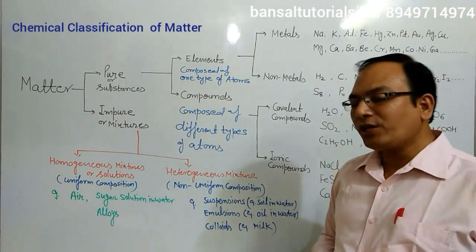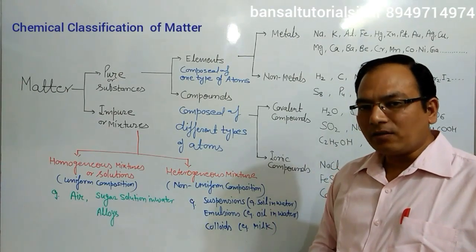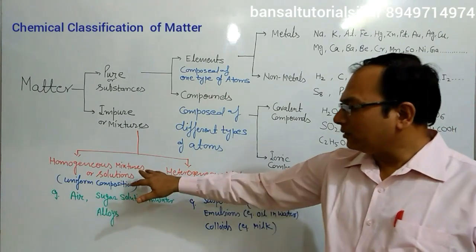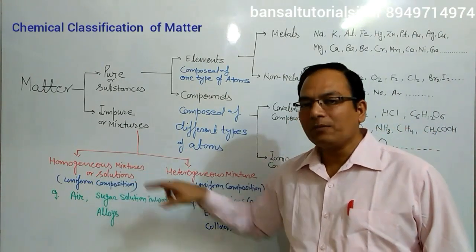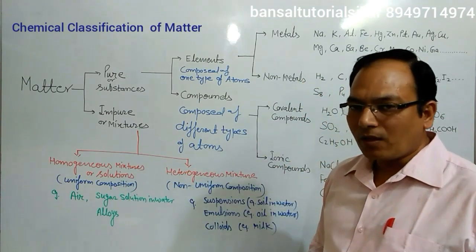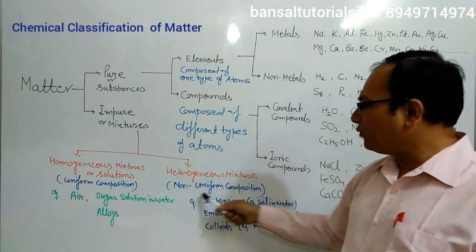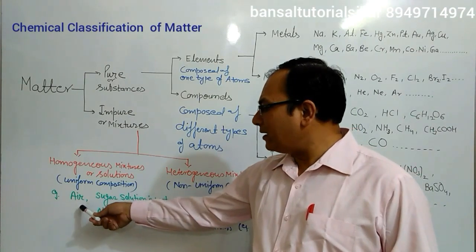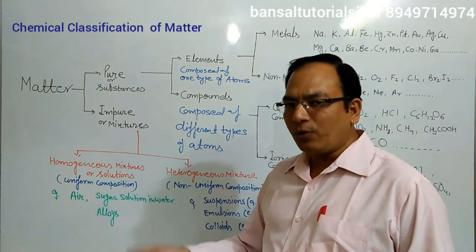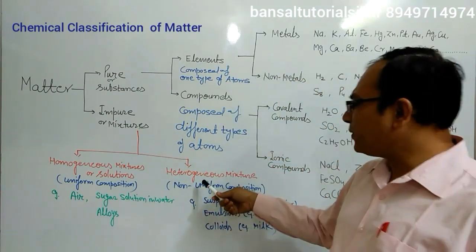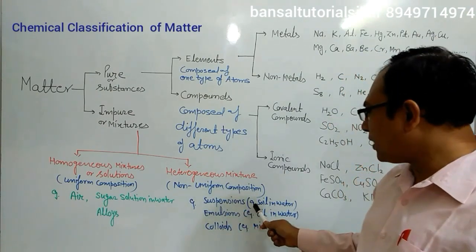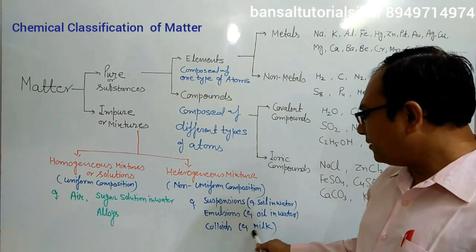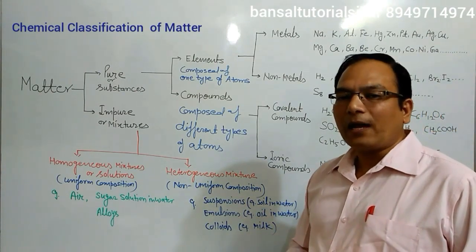Impure matter or mixtures are composed of different kinds of particles. If all these particles are uniformly mixed together, meaning the composition of the mixture is uniform, that is called a homogeneous mixture. Homogeneous mixtures are also known as solutions. If the composition of the mixture is not uniform, that is called a heterogeneous mixture. Examples of homogeneous mixtures are air, sugar solution in water, and alloys. Examples of heterogeneous mixtures are suspensions — for example soil dissolved in water — emulsions like oil in water, and colloids like milk.